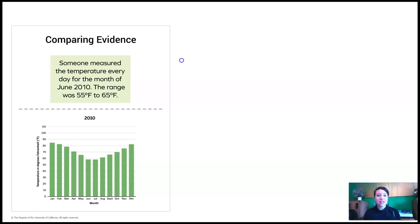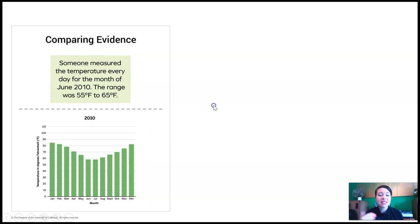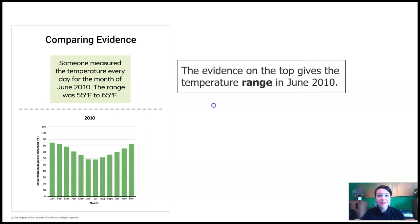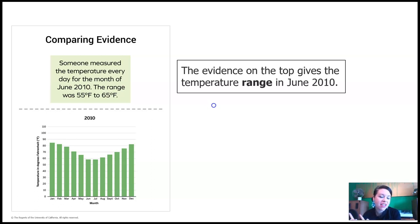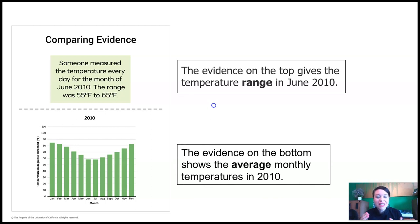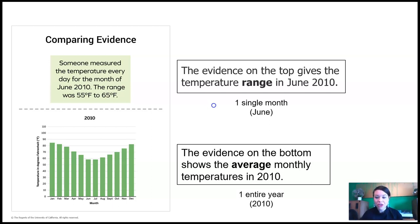Today we're going to be comparing some new evidence. Take a look at this evidence card. On the top, it says someone measured the temperature every day for the month of June 2010, and the range was 55 degrees to 65 degrees Fahrenheit. The evidence on the bottom shows the average monthly temperatures for every month in 2010. So the evidence on the top is one single month of June, and the evidence on the bottom is one entire year for all of 2010.